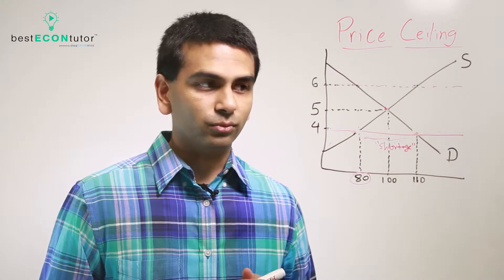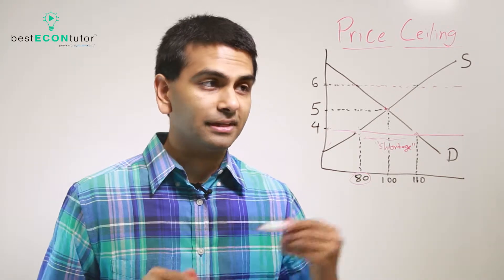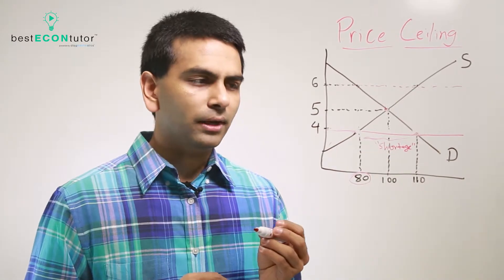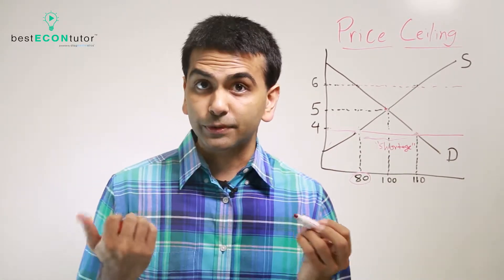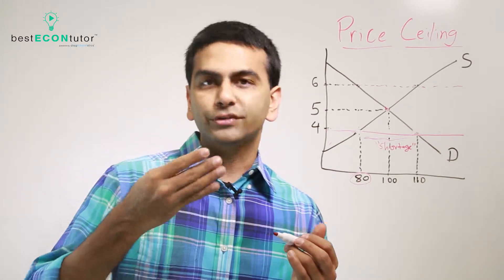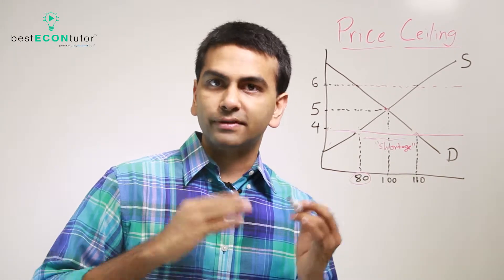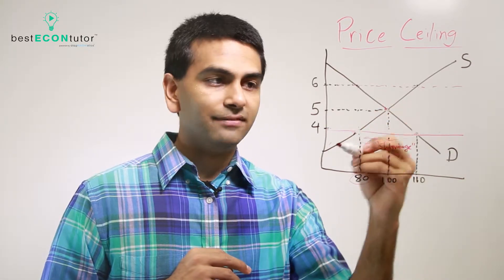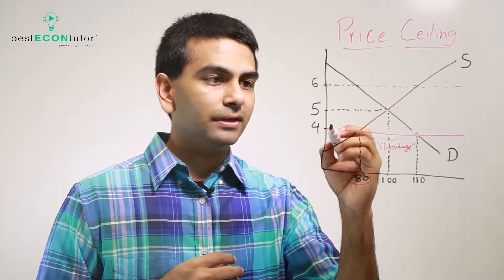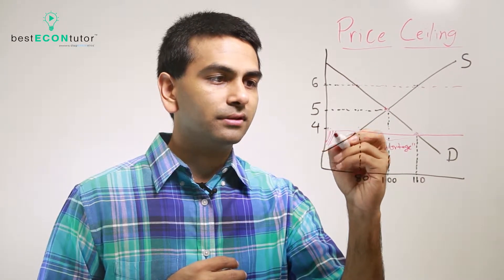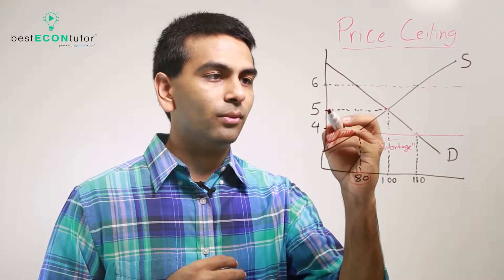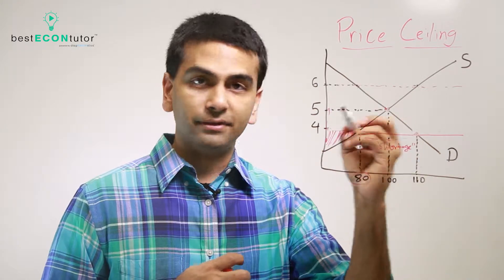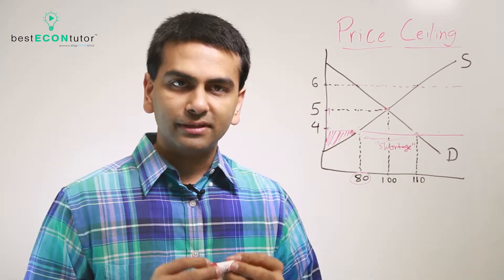Now what happens to consumer and producer surplus with the new equilibrium at price $4 and quantity 80? Producer surplus is the area underneath the price and above the supply curve. It used to be a triangle under $5, but now the price is only $4, so producer surplus shrank — it went down by that trapezoid. The new producer surplus is clearly less.